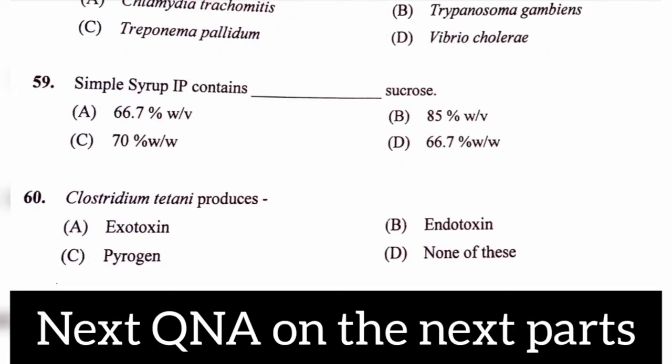Question number 60. Clostridium tetani produces: option A, Exotoxin; option B, Endotoxin; option C, Pyrogen; option D, None of these. The correct answer is option A, Exotoxin. Clostridium tetani produces mainly two exotoxins: number one is tetanolysin and the other is tetanospasmin.